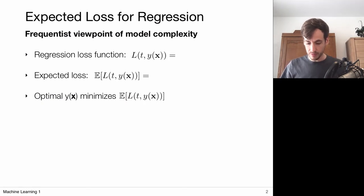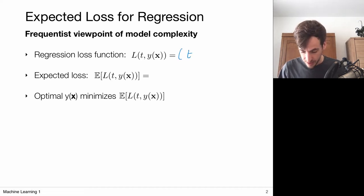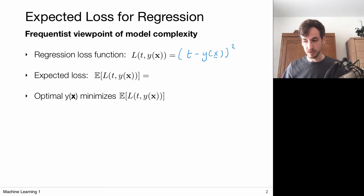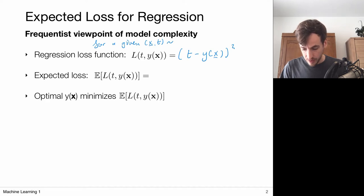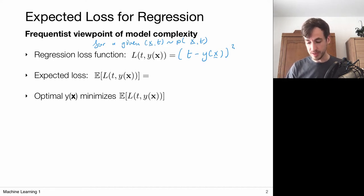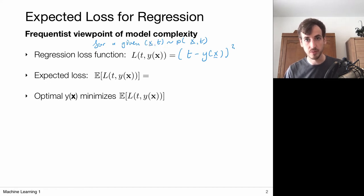So far we've considered regression and typically looked at the squared error. We have this loss defined by the quadratic distance of my target to my model's prediction — the squared loss computed for all observed data points. For a given input-output pair, which we assume to be drawn according to some probability distribution, we say that our data is generated via this distribution, where some combinations of input-output pairs are more common than others.